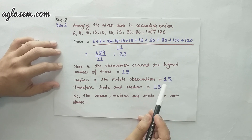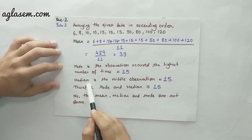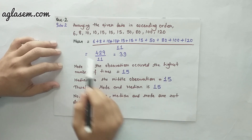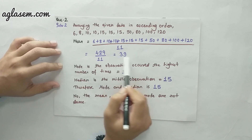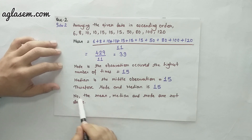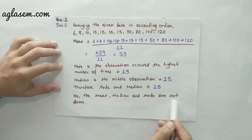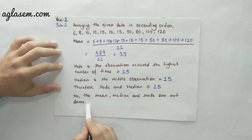Now we have to see if the mean, mode, and median are the same. As I can see, mode and median are the same — they are both 15 — but the mean is 39. Therefore, no, the mean, median, and mode are not all the same.